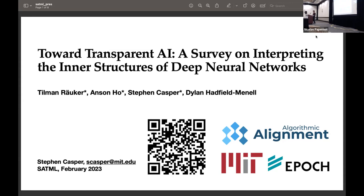Hey, everyone. My name is Stephen Casper, and you can usually find me at MIT. I'm excited to talk today about one of the three systematization of knowledge papers at this conference. This paper is titled Towards Transparent AI, a survey on interpreting the inner structures of deep neural networks.